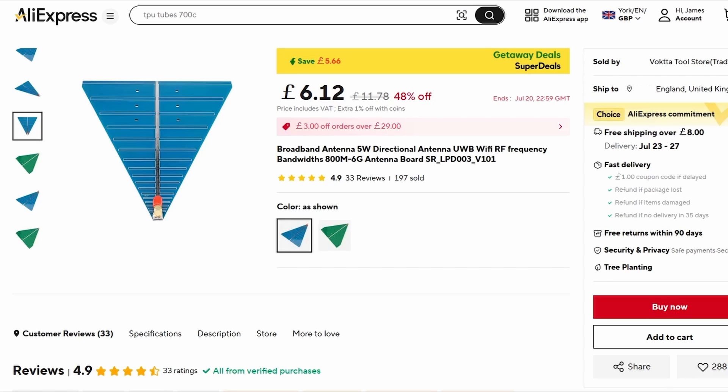I stumbled across this. So it's an ultra wideband Wi-Fi RF frequency antenna. It's a directional antenna and it claims it's got a bandwidth from 800 megahertz to six gigahertz. That's a massive bandwidth. You can see it's got 4.9 stars, so it must be good.